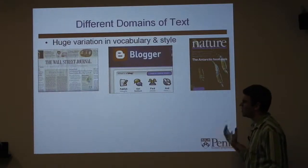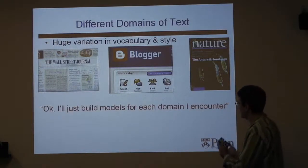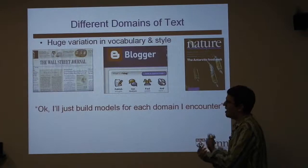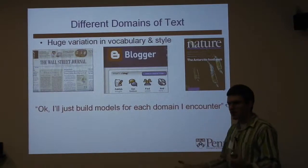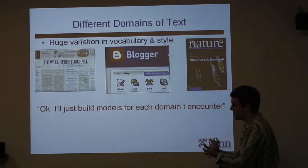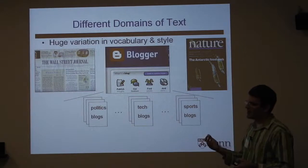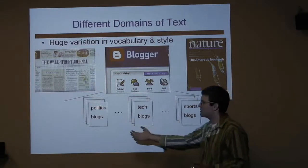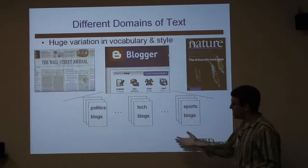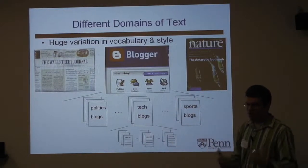One way to approach this is just to train a model in each domain, so we can handle all the data we ever encounter. That works well, but training a model usually involves some sort of annotation. In the case of something like translation, this means you would have to go and get a translator to translate blogs for you — it's not cheap. Furthermore, it's unclear what exactly is meant by domain. Within blogs, there's a wide variety of different kinds of language — blogs about cell phones versus about software. Where do you draw the line?